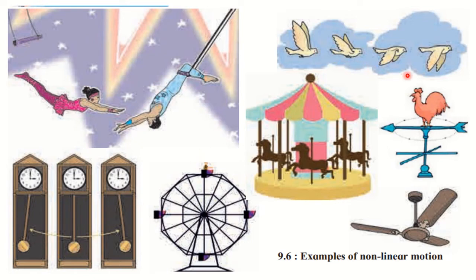Here you can see examples of non-linear motion: circus swings showing oscillatory motion, the pendulum of a clock moving back and forth, wings of a bird showing oscillatory motion, and merry-go-round showing circular motion. In all these, the motion does not take place in a straight line — the object continuously moves in different directions.